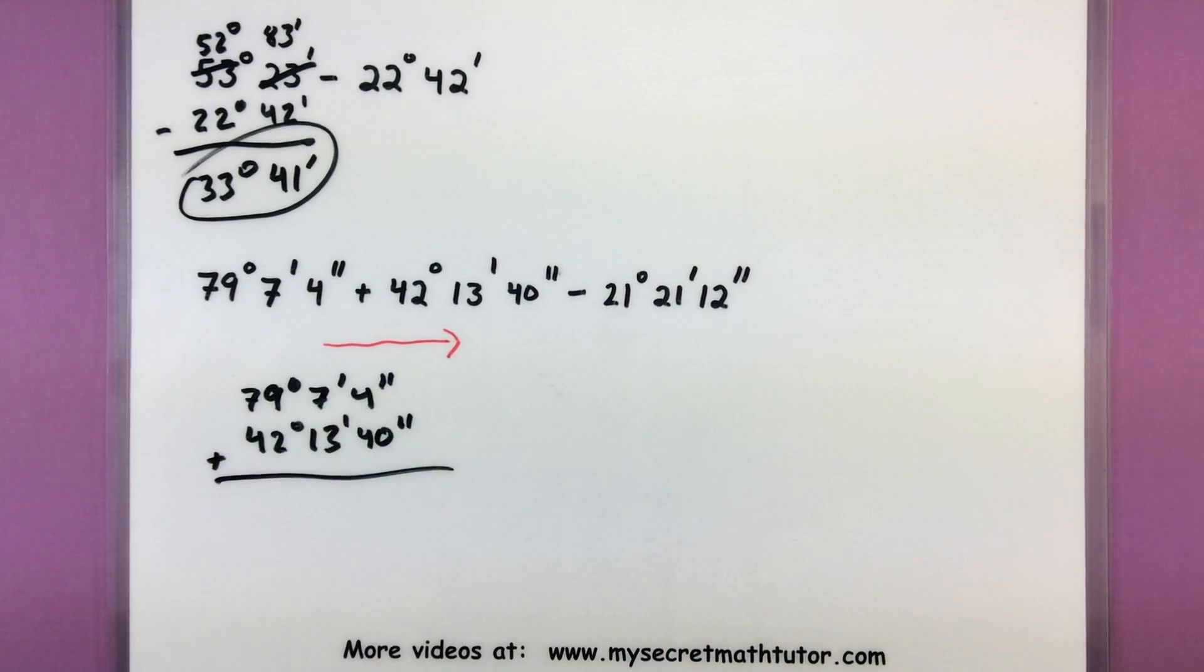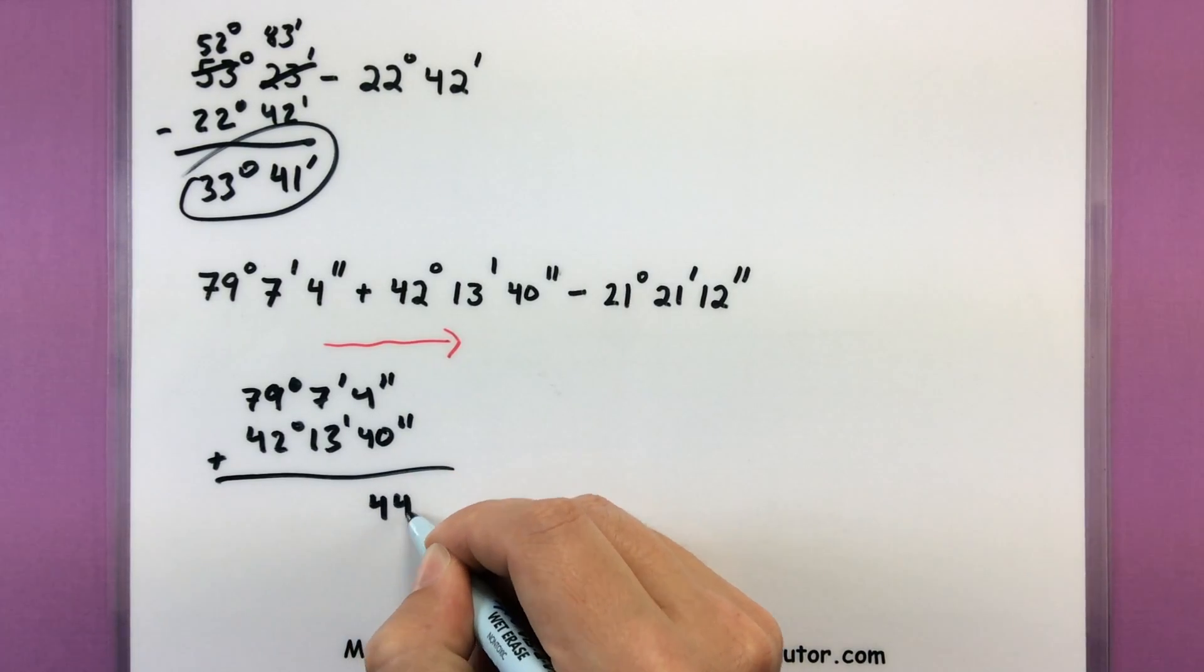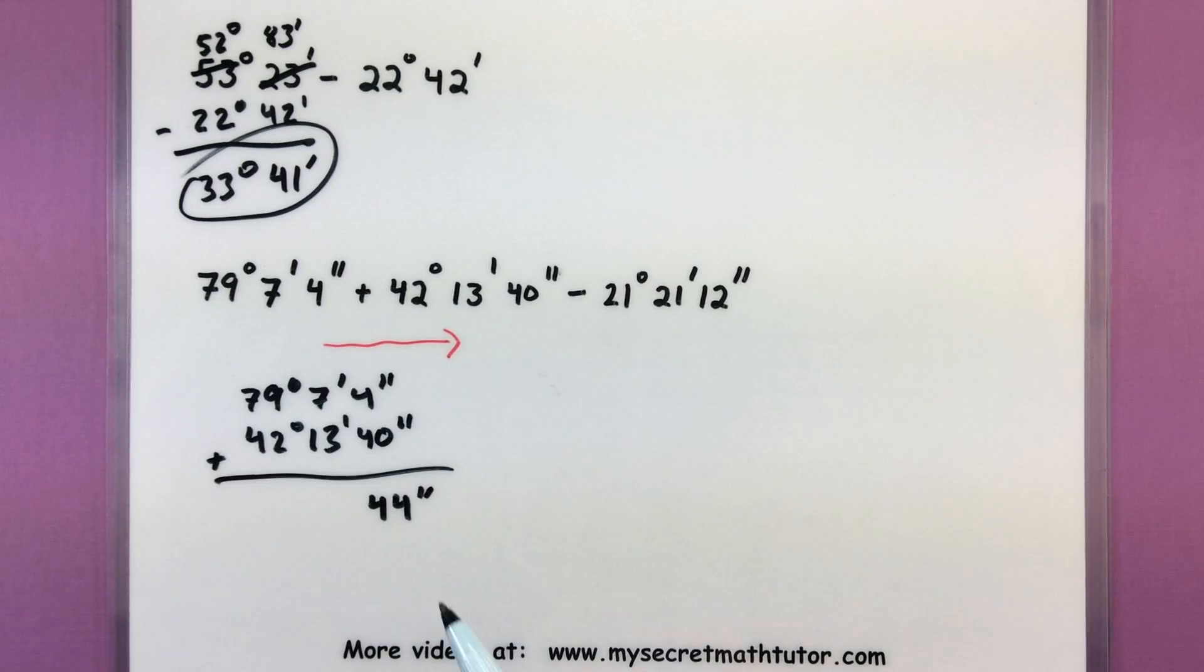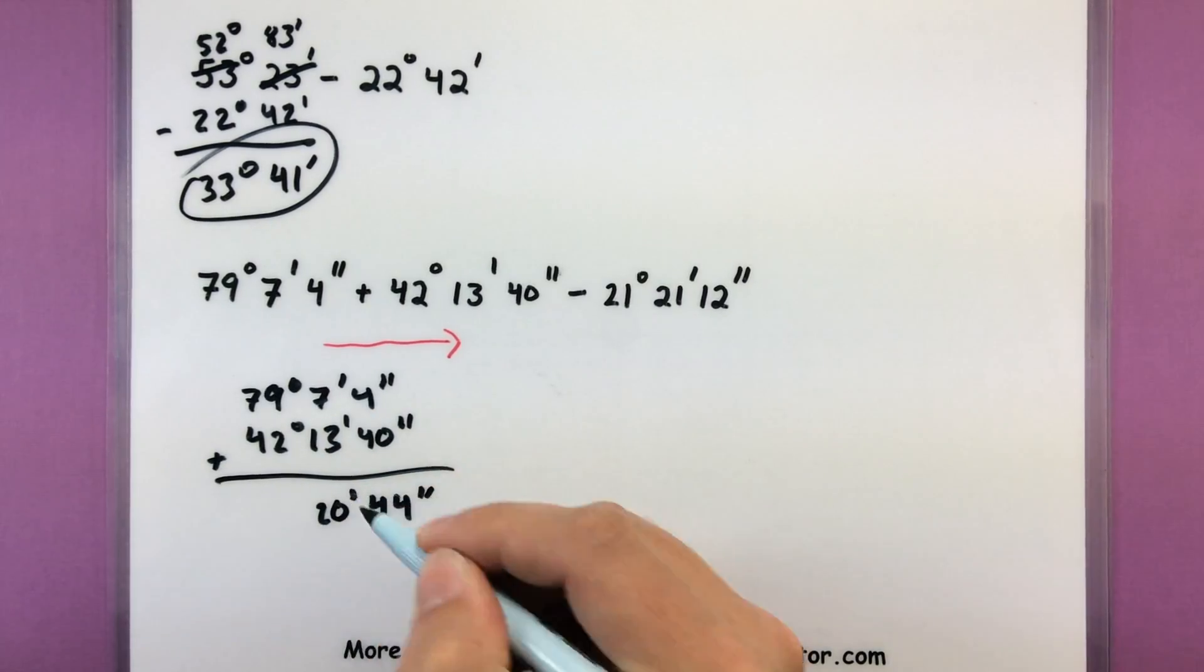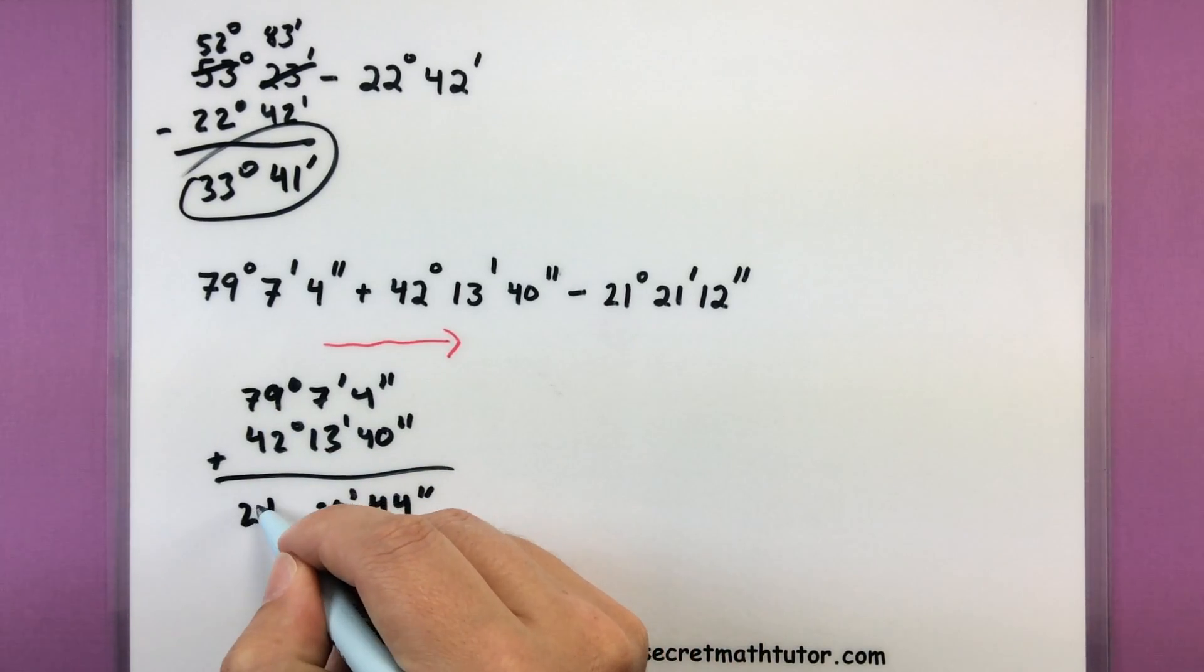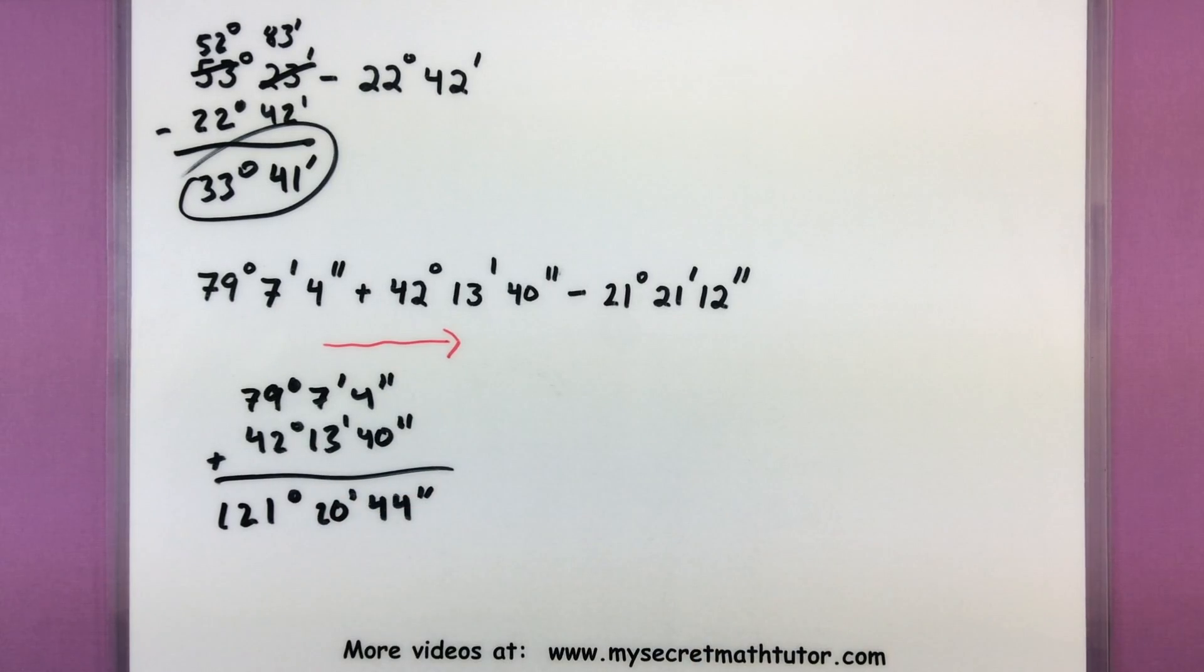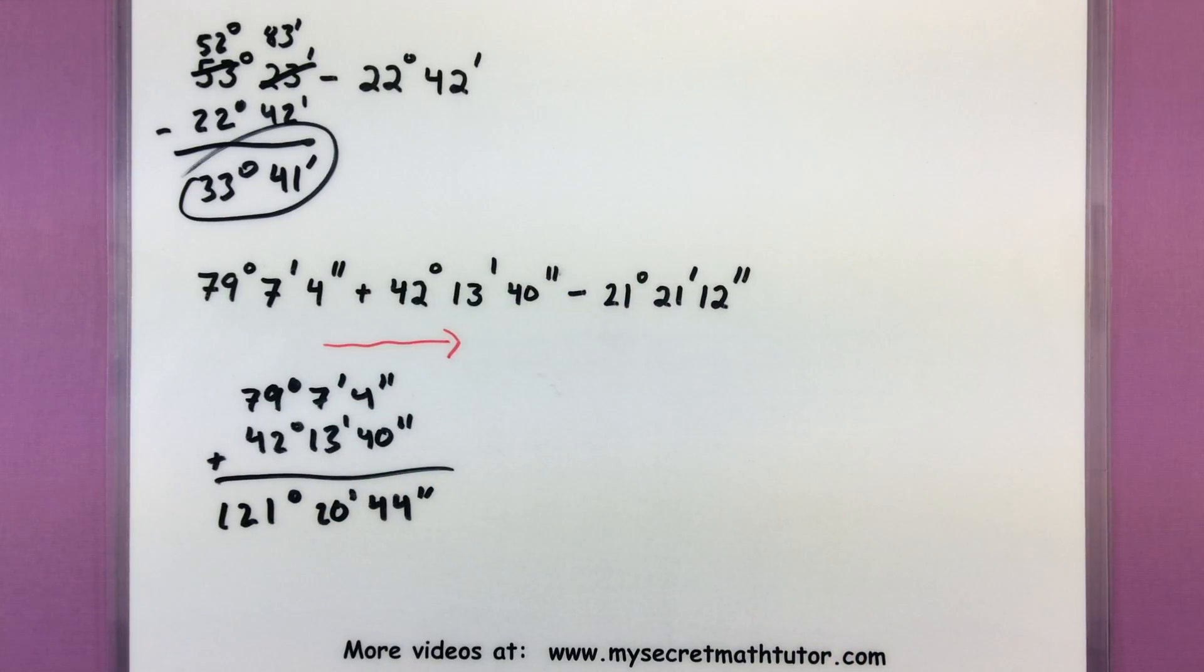And we are adding. So starting over here on the right side, I have 4 plus 40, so there's 44 seconds. 7 plus 13 is 20 minutes. And adding these last two together, 121 degrees. Now like before, if any of these added up to be more than 60, I'd take one of those groups and drop it into the next column. So if I had more than 60 seconds, I'd take one of those groups and drop one into the minutes.